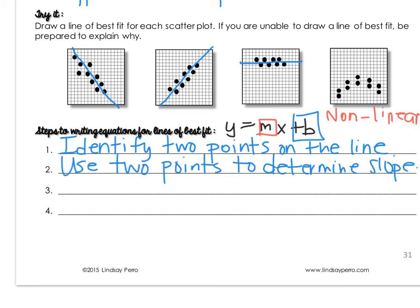Then use those two points to determine the slope. As a point of review, slope is found by doing the change in y over the change in x, so a vertical change over a horizontal change. And an ordered pair has x first and y second.